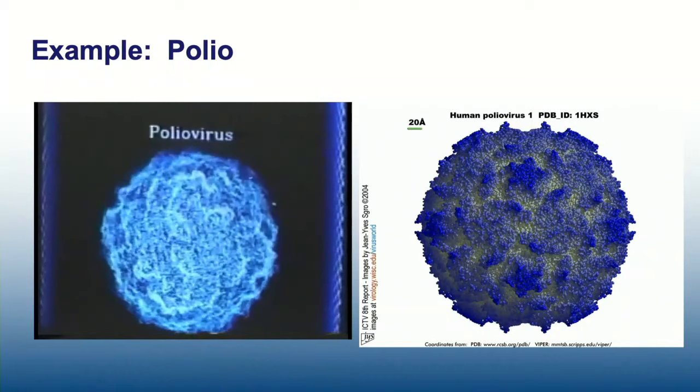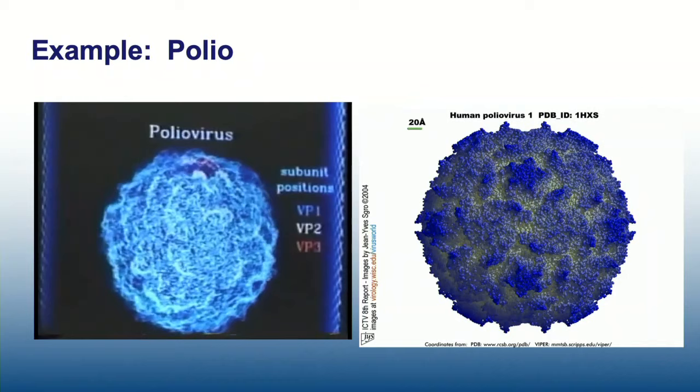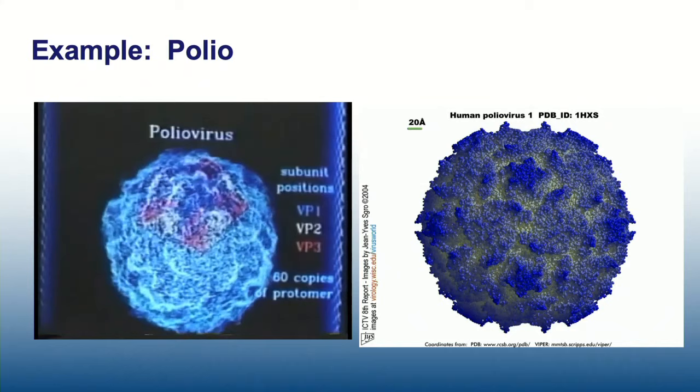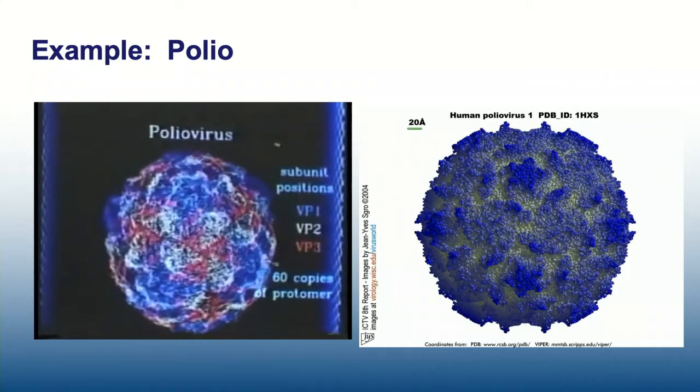This is an animation, on the other hand, by Art Olson, at Scripps Institute of the poliovirus. And they go through the animation. This is circa 1984. So it's kind of weird. They start to highlight the mathematical symmetries that you're seeing there. They're highlighting one of the pentagonal structures.